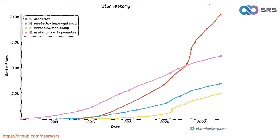SRS also worked with HTTP, FLV, and HTTP-TS, which are similar to RTMP. In 2020, we expanded our community and added support for WebRTC and SRT, allowing for sub-second latency. SRT latency is around 300 to 500 milliseconds, while WebRTC latency is between 80 to 200 milliseconds.